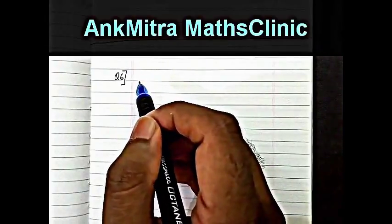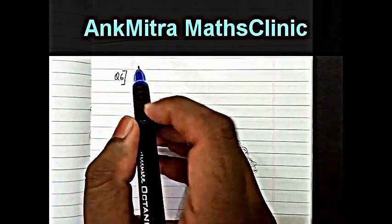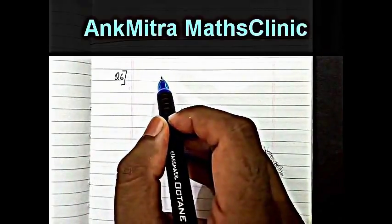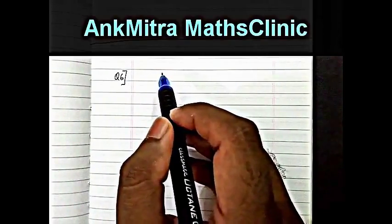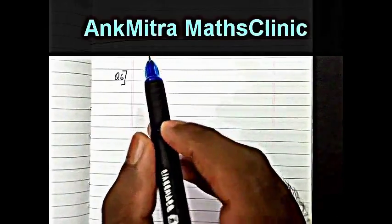This question involves addition of 18 consecutive positive integers and this sum should be a perfect square. We are asked to find the smallest possible value for this sum. So let us first start with the smallest possible sum.